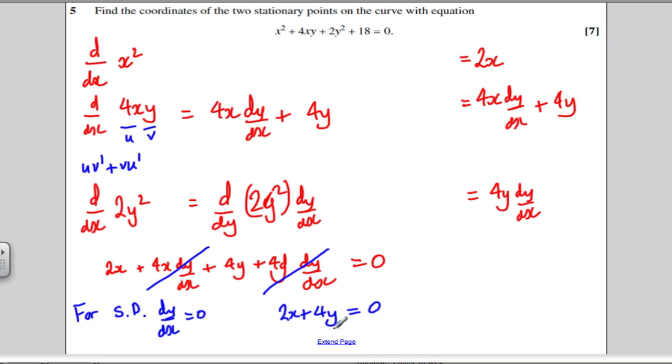And maybe make x the subject of this formula. Subtract 4y from both sides and divide by 2. x must be equal to negative 2y.